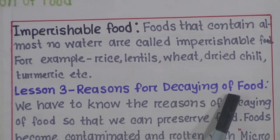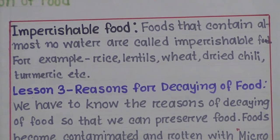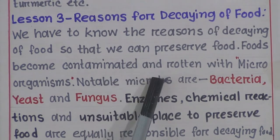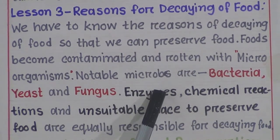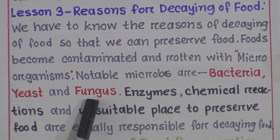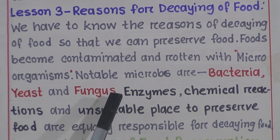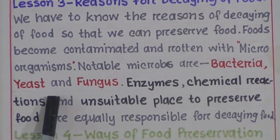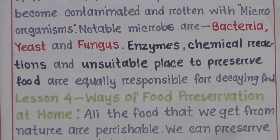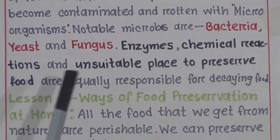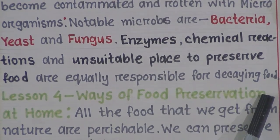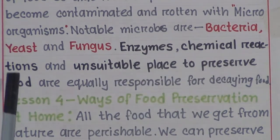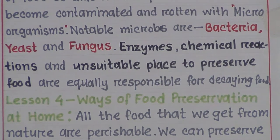Now we discuss lesson three: Reasons for Decaying of Food. We need to know why foods decay so that we can preserve them. Foods become contaminated and rotten when microorganisms multiply. These microorganisms are bacteria, yeast, and fungus. Also, enzymes, chemical reactions, and unsuitable storage places are equally responsible for food decaying.